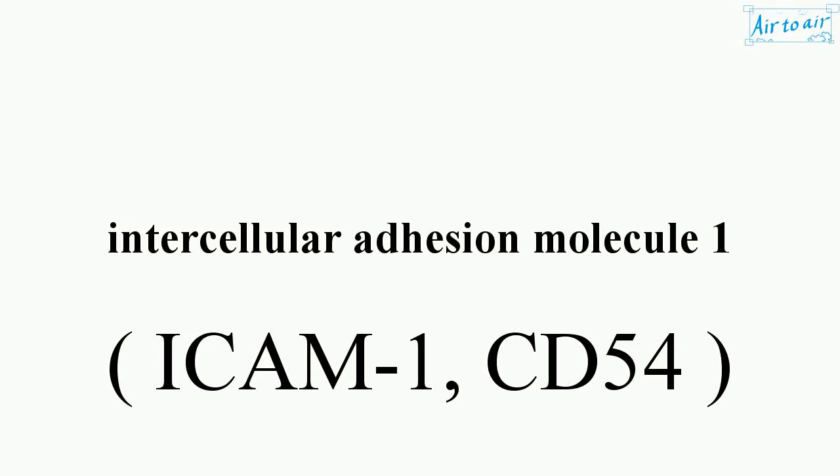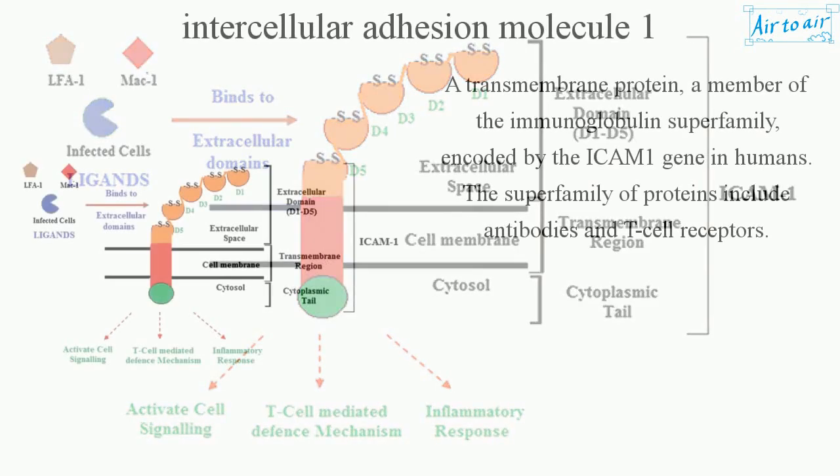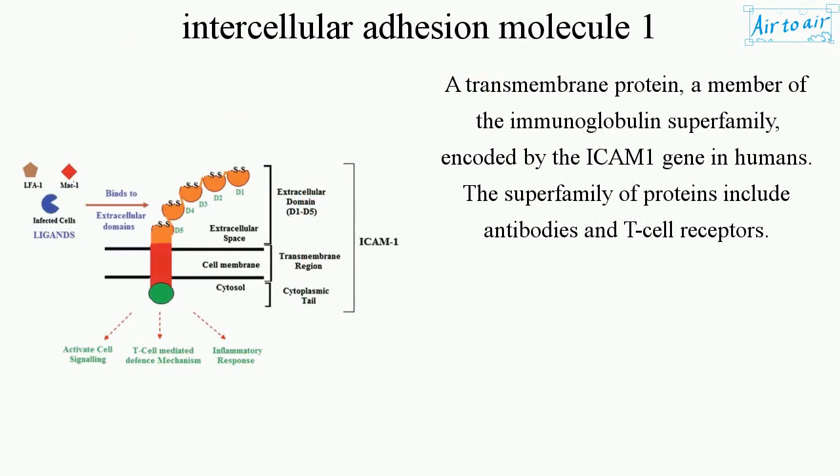Intercellular Adhesion Molecule 1 is a transmembrane protein, a member of the immunoglobulin superfamily, encoded by the ICAM-1 gene in humans. The superfamily of proteins includes antibodies and T-cell receptors.